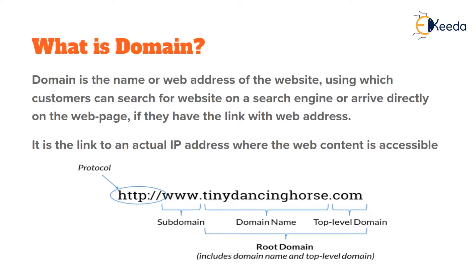As you can see, a domain name starts with an HTTP protocol, then you have a subdomain — www, the World Wide Web — then the actual domain name, which often pertains to the content or the brand. Then you have a top-level domain or extension, also called a TLD. The domain name and TLD together are also called the root domain.